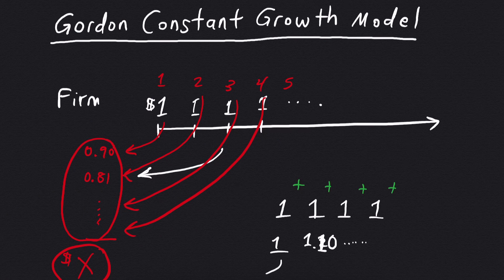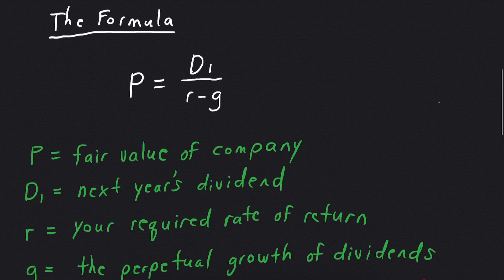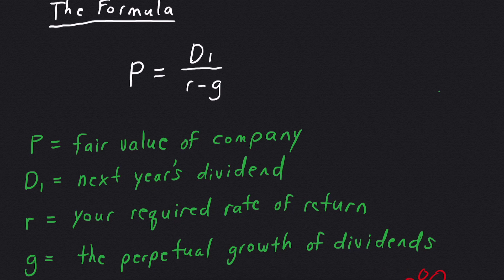And then of course, each of these would be discounted back at our discount rate. So here is the formula. We've got the price of the stock or the estimated price that we're going to pay for it. We have the dividend, which you'll notice is D1, which signifies it's next year's dividend. We have r, which stands for your required rate of return. And then we have g, which is the perpetual growth rate of these dividends.